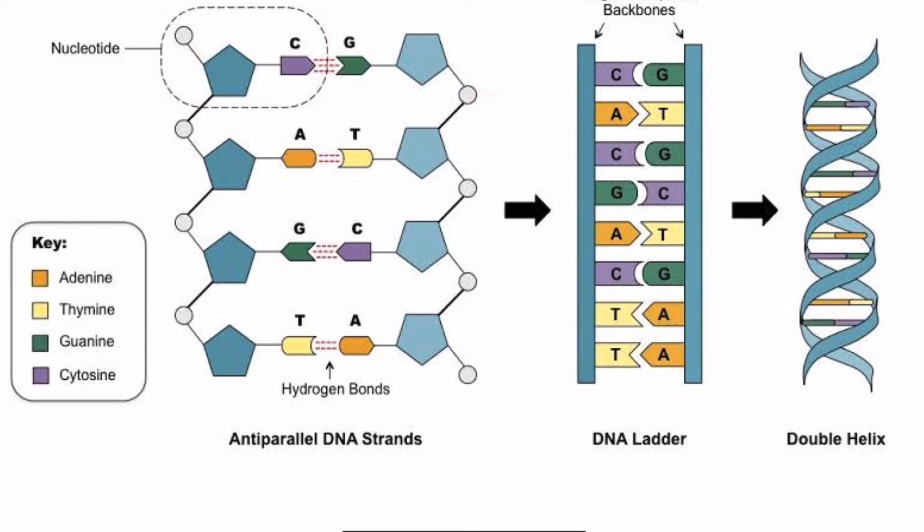And the phosphate groups in the phosphodiester bond are mainly negatively charged - they have the negative charge. Why? Because at physiological pH, phosphates have a negative charge. Now finally, this DNA is now forming this double helix.